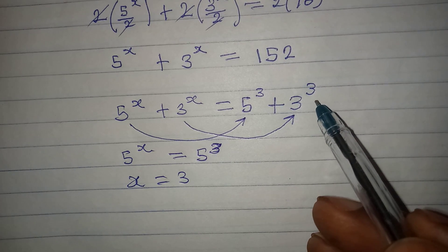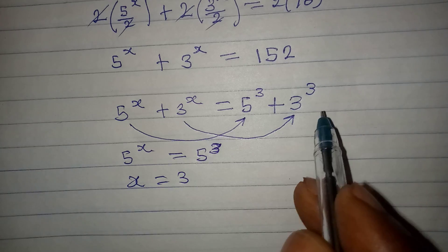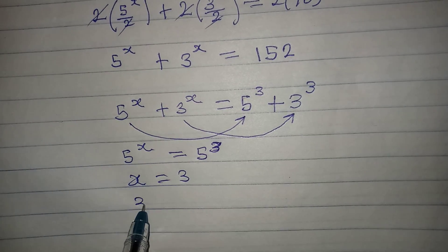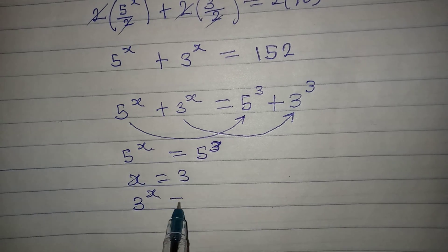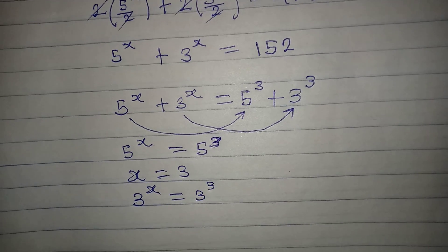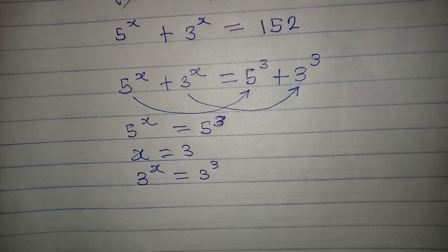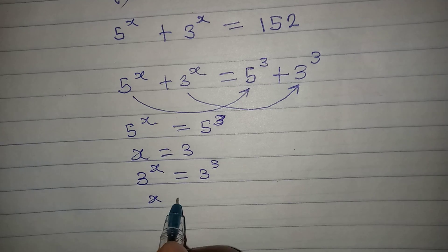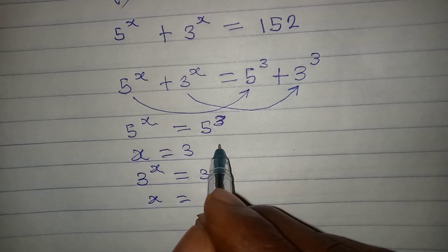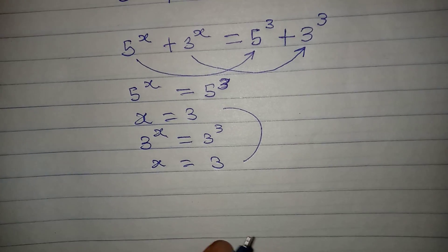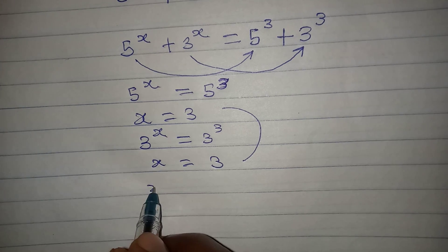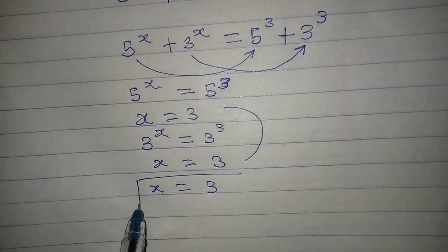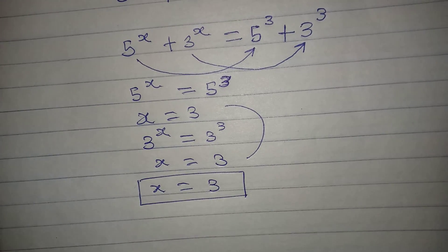We can equally compare the second terms: 3 to the power of x will also be equal to 3 to the power of 3. The bases are also the same, therefore the powers must be the same, so x is equal to 3. Both comparisons confirm x = 3.